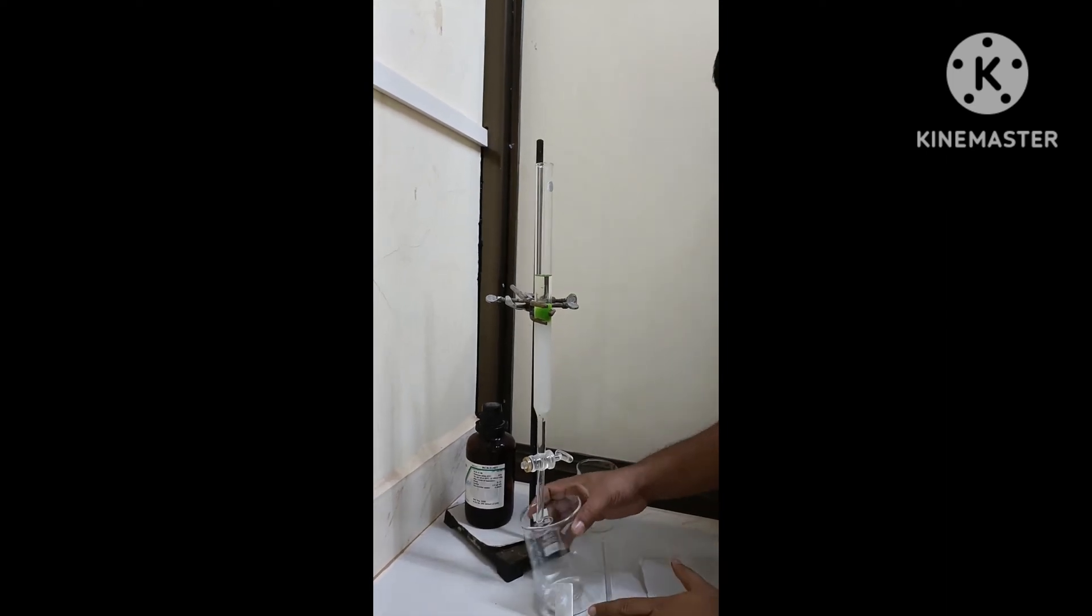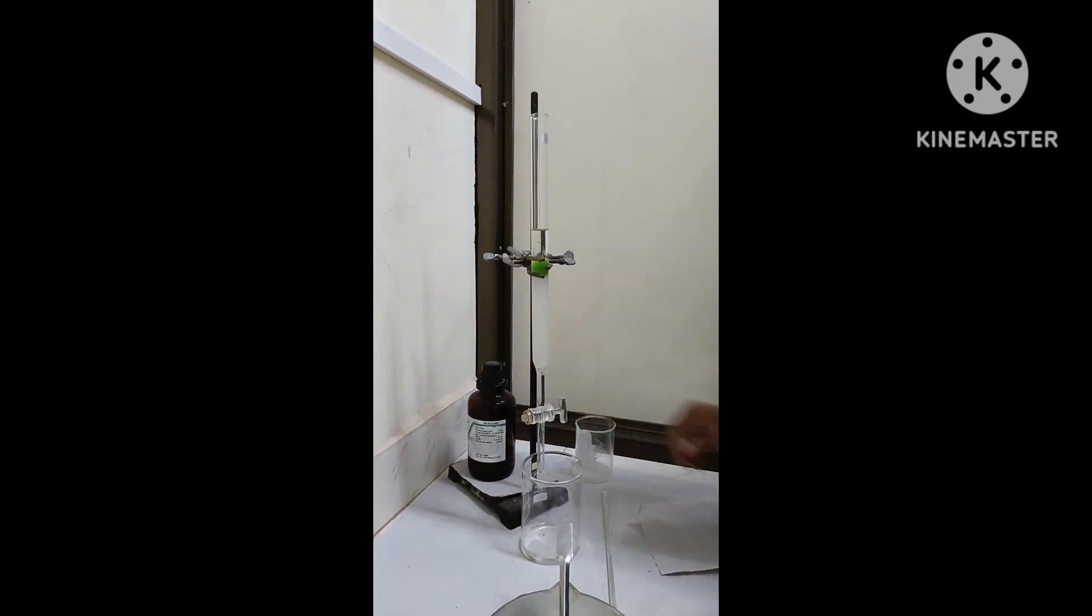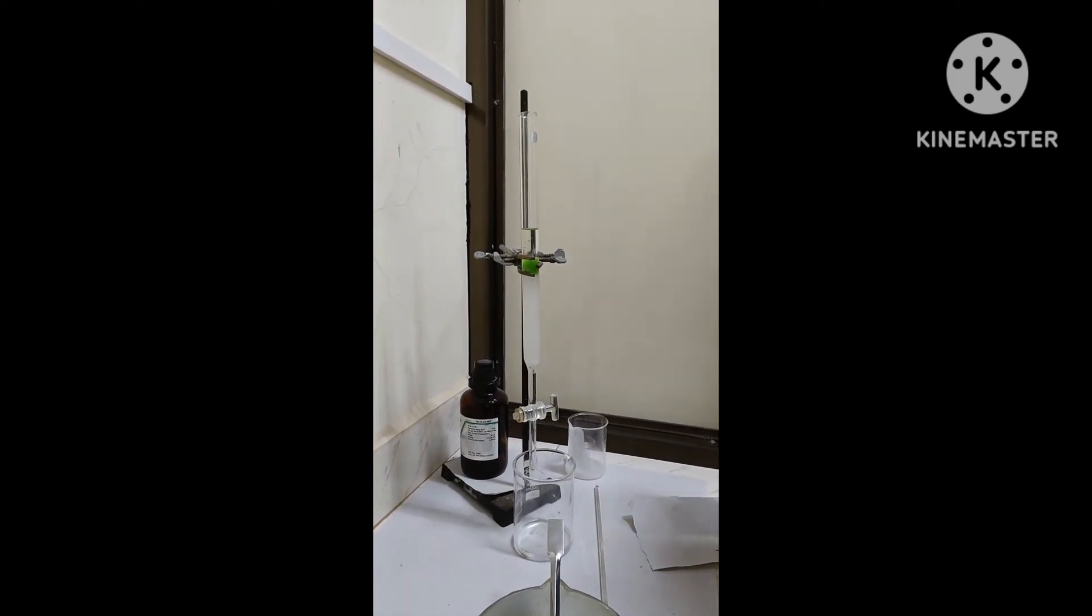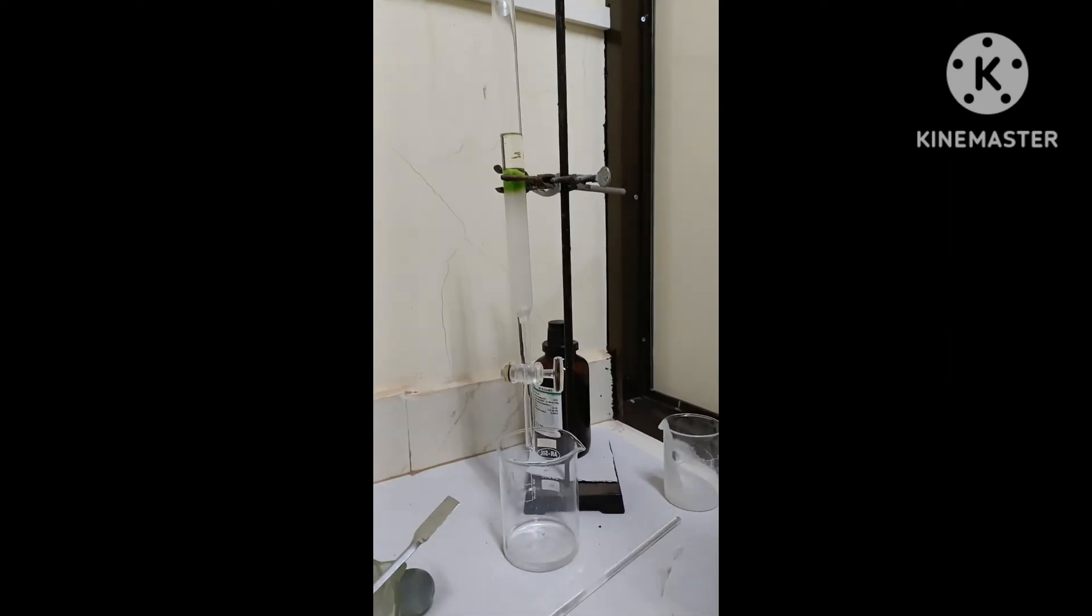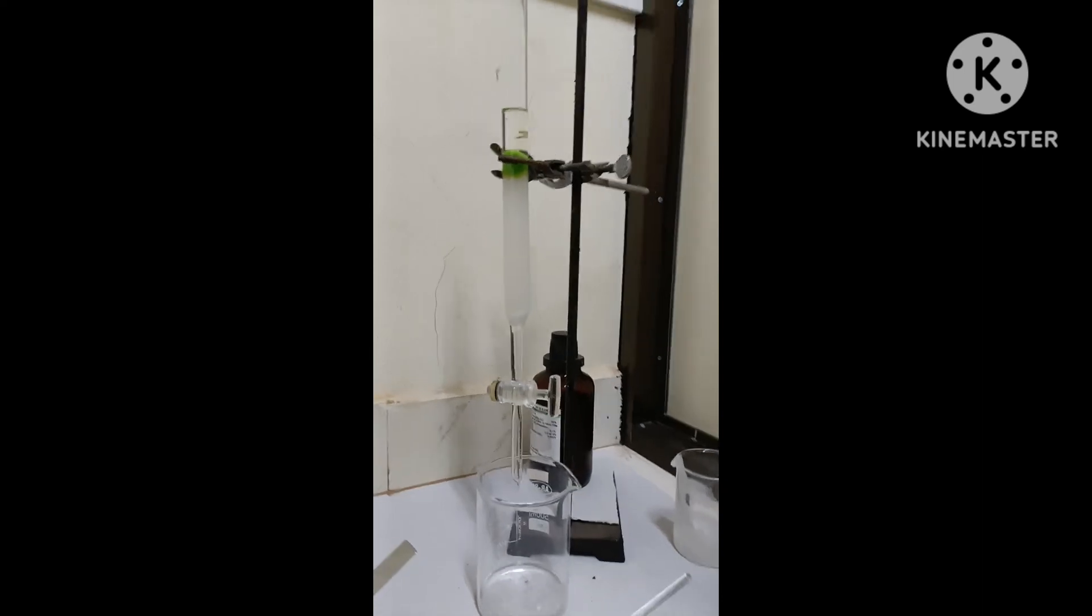The sample will settle down properly, and then again, we can add the silica slurry so that when we add the solvent system or the mobile phase, it will not disturb the column.